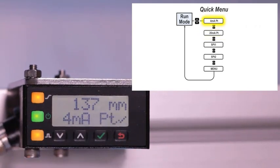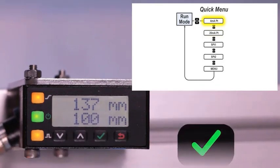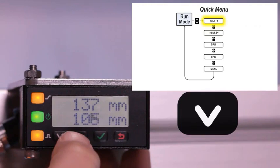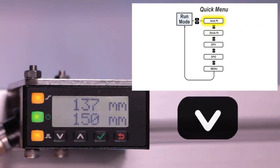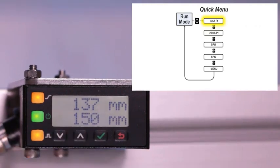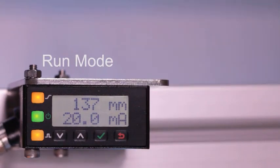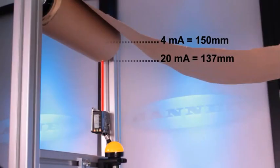Click enter and the 4 milliamp value will now start flashing, indicating that the up and down buttons can be used to manually adjust the value without having to present a target. Because the core diameter is known to be at 150 millimeters, the 4 milliamp point can be set at 150 millimeters without having to unwind the roll to present a target.